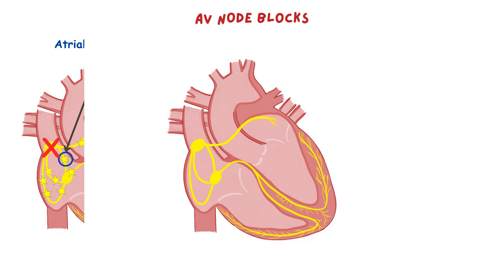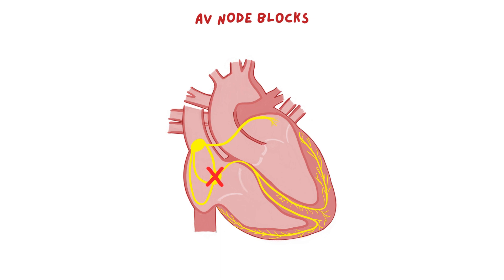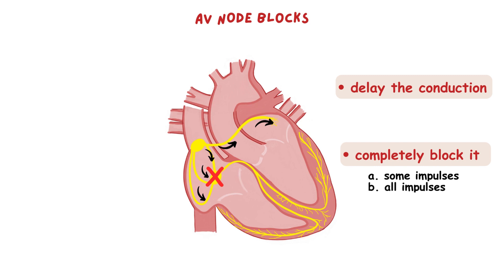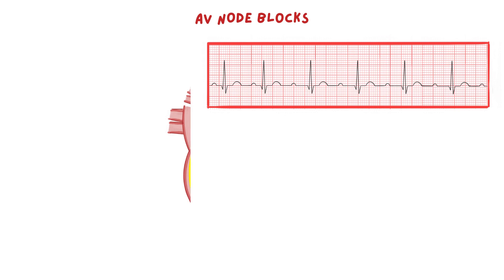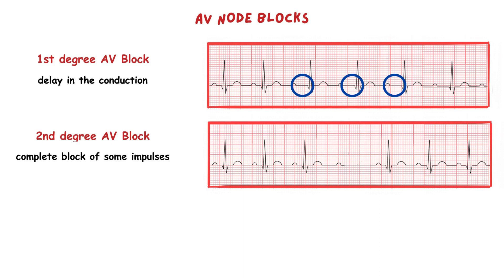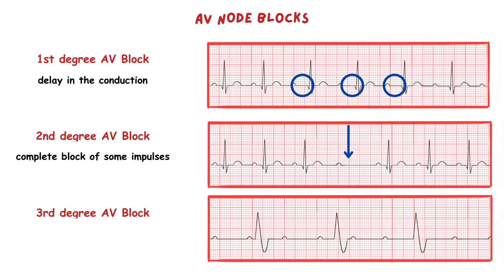Now let's focus on the AV node blocks. AV node blocks are an obstacle in the conduction of the electrical impulse through the AV node. They either delay the conduction of the impulse from the atria to the ventricles or completely block it — either some impulses or all impulses. According to this, we have three degrees of AV blocks. First degree is presented with a delay in conduction, second degree with complete block of some impulses, and third degree with complete block of all impulses with completely independent atrial and ventricular depolarization.